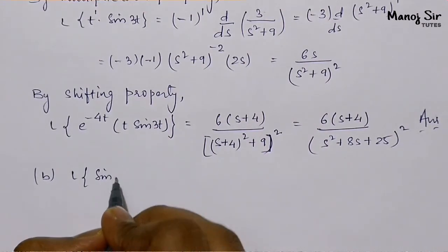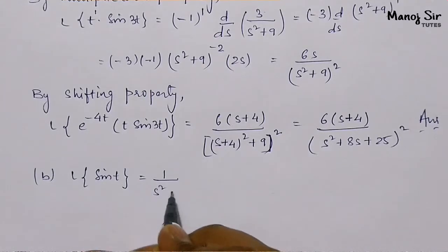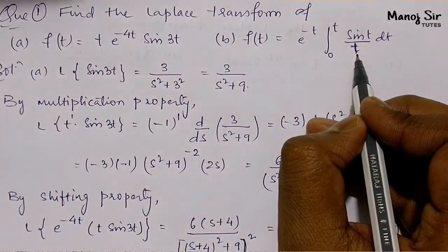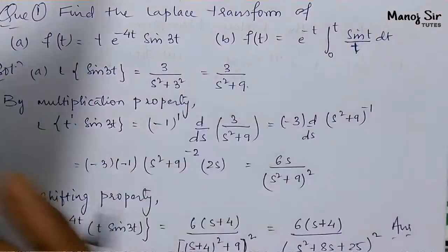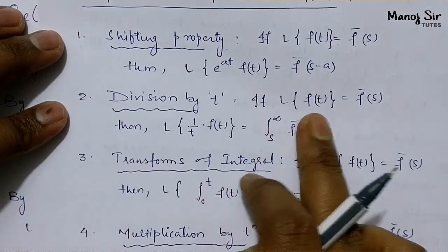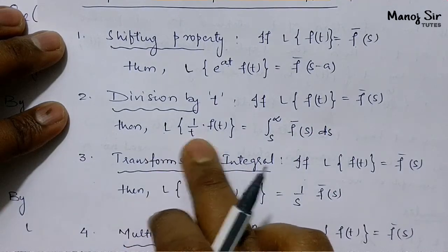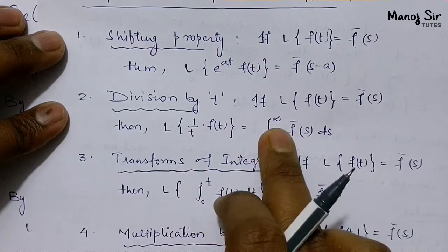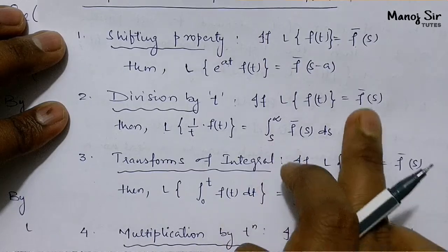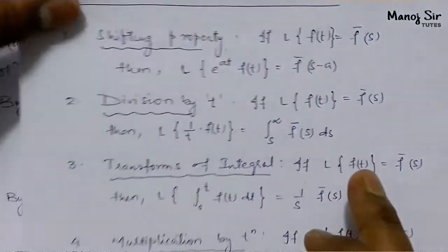First, L{sin t} = 1 / (s² + 1). Now the division property states: if L{f(t)} = F̄(s), then L{f(t)/t} = ∫ₛ^∞ F̄(s) ds, meaning we integrate F̄(s) from s to infinity with respect to s.